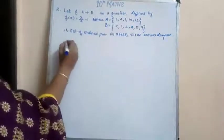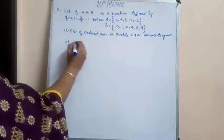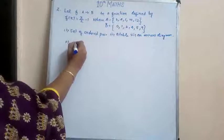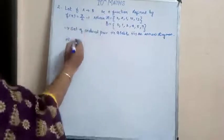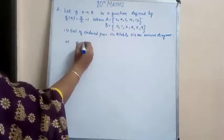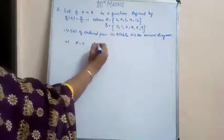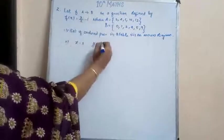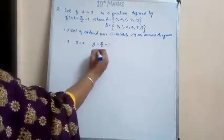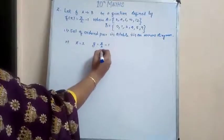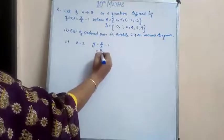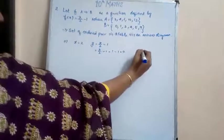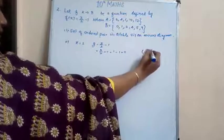So the first thing we have to do is set of ordered pairs. So when an element from set A is taken, let us represent it as x, then the corresponding value of y is, so the function is x/2 - 1. So x is 2 here. So 2/2 - 1, so 1 - 1 is 0. So the corresponding ordered pair is (2, 0).